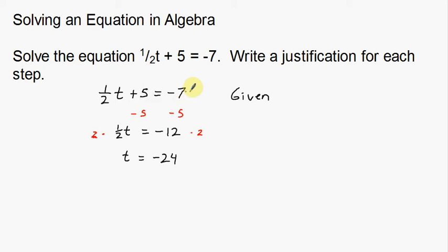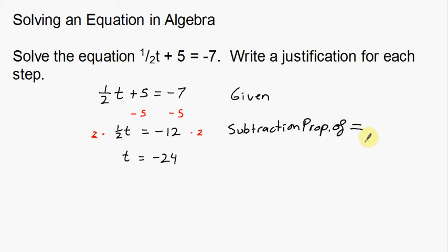From the given statement, how did I get to the next step? I subtracted 5 from both sides, so this would be the subtraction property of equality. Notice the abbreviations I'm using: 'prop.' for property, and an equal symbol for equality. That's the reason why I could do the first step.